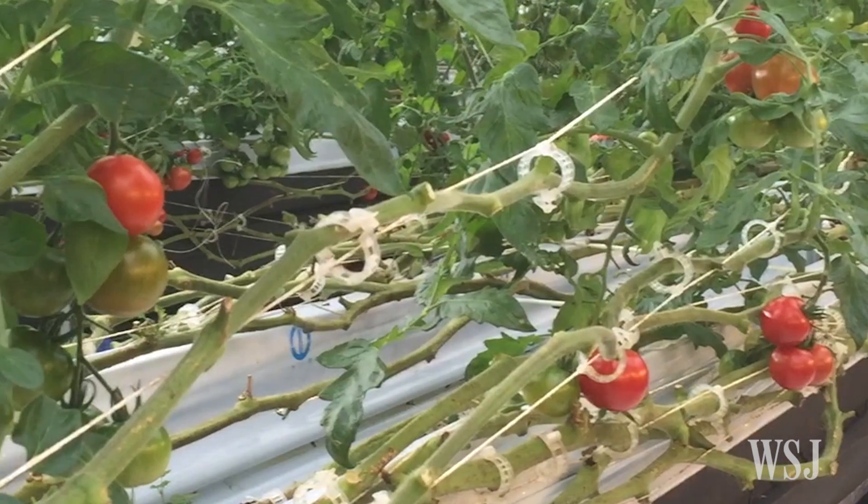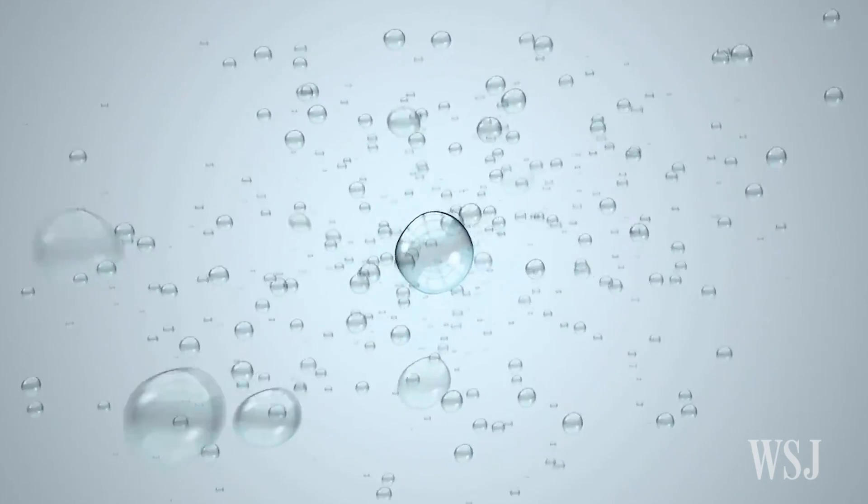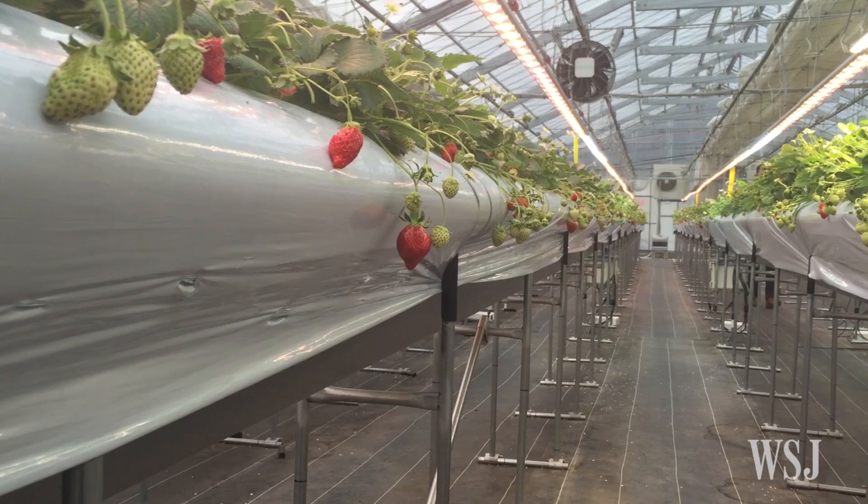Bigger, juicier tomatoes and strawberries can be harvested by irrigating water injected with ultra-fine bubbles. These bubbles help accelerate activities of soil microorganisms which encourage growth of plant roots and speed up nutrient absorption.